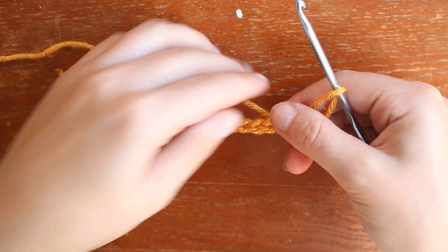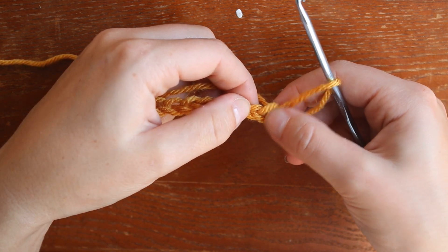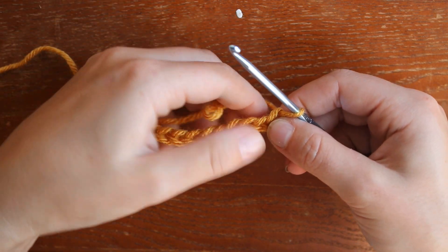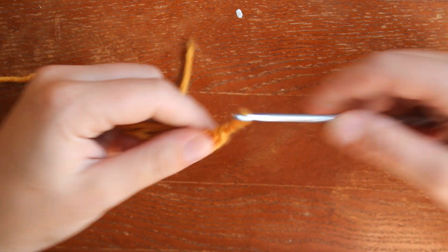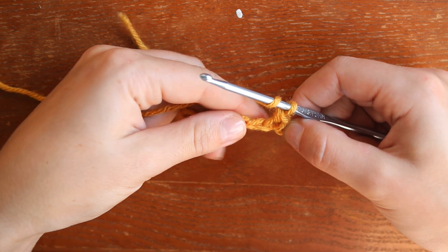So now we're going to go into the stitch right after the one on our hook and we're going to do a single crochet. Then we're going to do a double crochet into the chain after that.